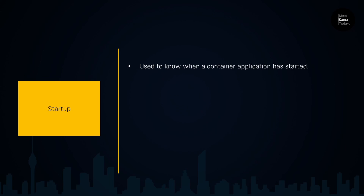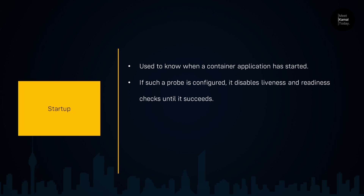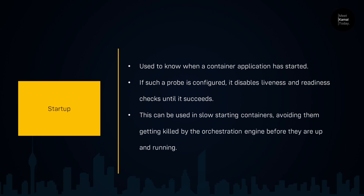And finally, we have startup probes. These are used when it takes longer for your container to start up. If such a probe is configured, it disables liveness and readiness checks until it succeeds. This can be used in slow-starting containers, avoiding them getting killed by the orchestration system before they have been fully started.